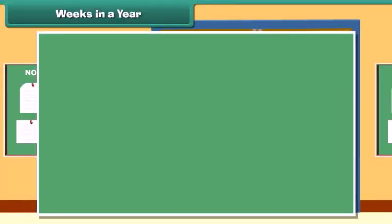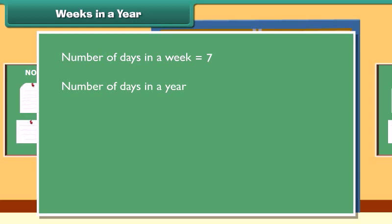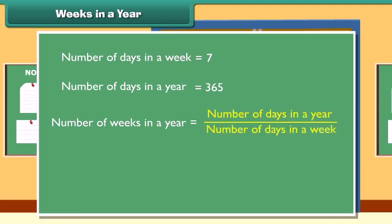Weeks in a year. The number of days in a week is 7, and the number of days in a year is 365. The number of weeks in a year equals the number of days in a year divided by the number of days in a week, which is 365 divided by 7, equalling 52 weeks.